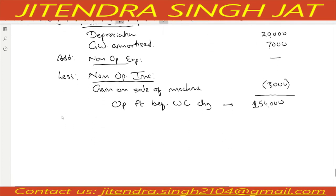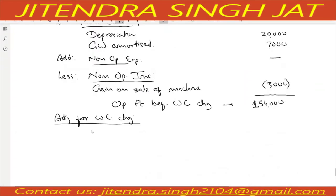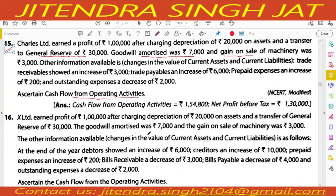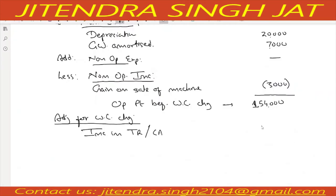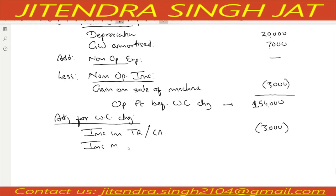Now we need to do some adjustment for working capital changes. Current assets and current liabilities are given. Trade receivable showed an increase of Rs. 3,000 — trade receivable is a current asset, and an increase means cash goes out, so it will be reduced. Trade payable increased Rs. 6,000 — trade payable is a current liability, and an increase in current liability means inflow of cash: Rs. 6,000 added.